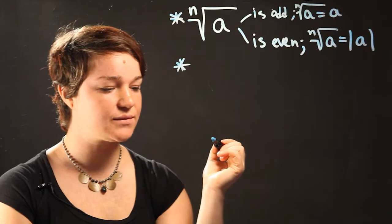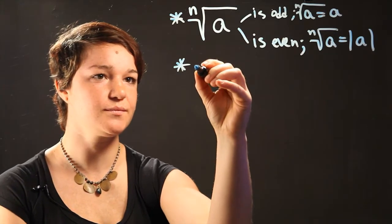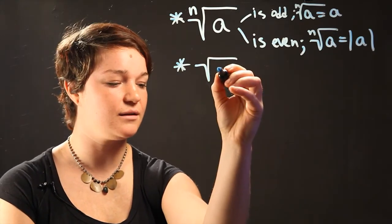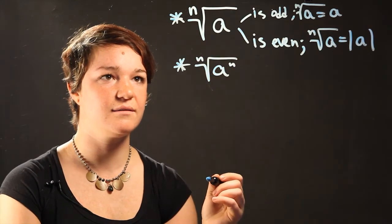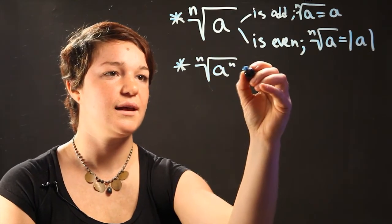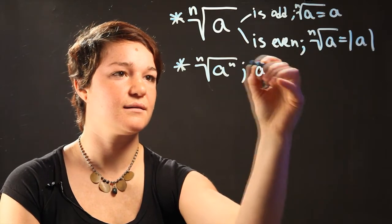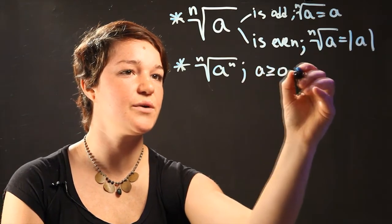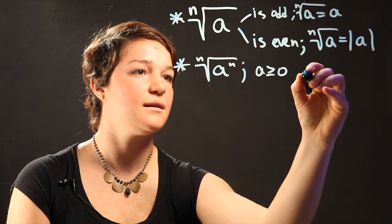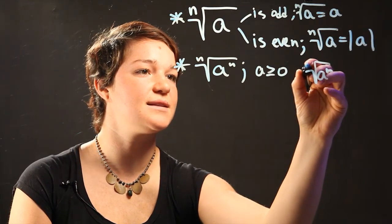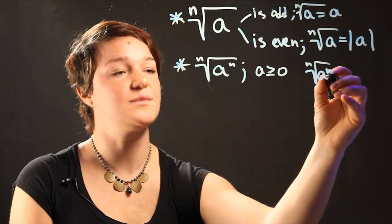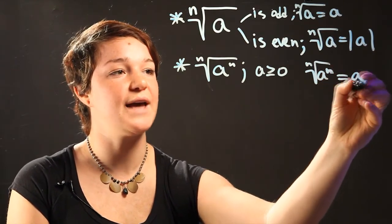Likewise, the next rule is going to be: if the radical of a to the n power with index n, and a is greater than or equal to zero, then this property—the radical of a to the n power with index n—is going to be equal to a.